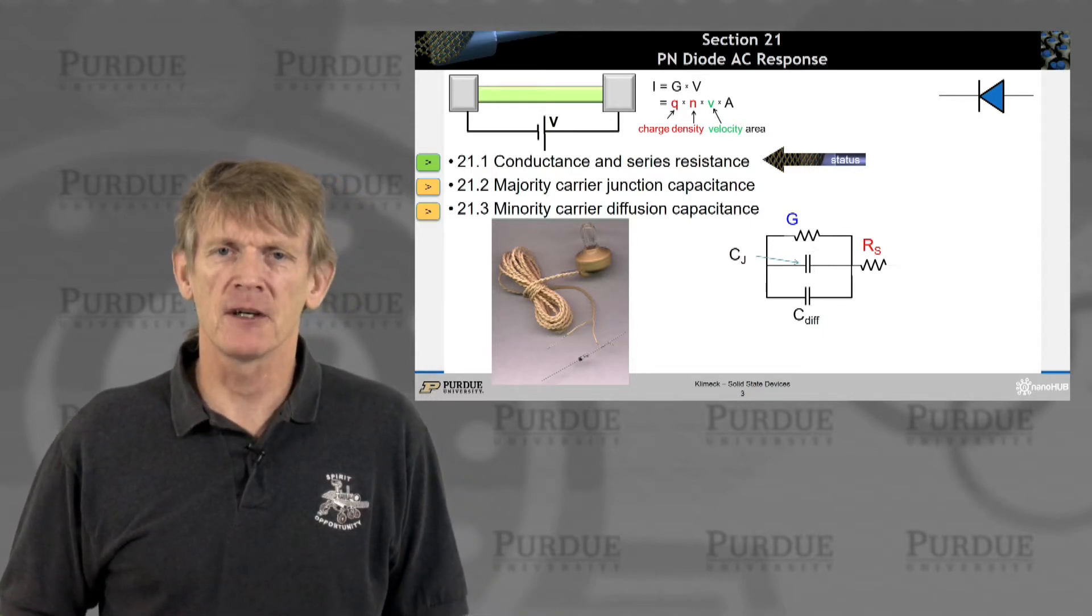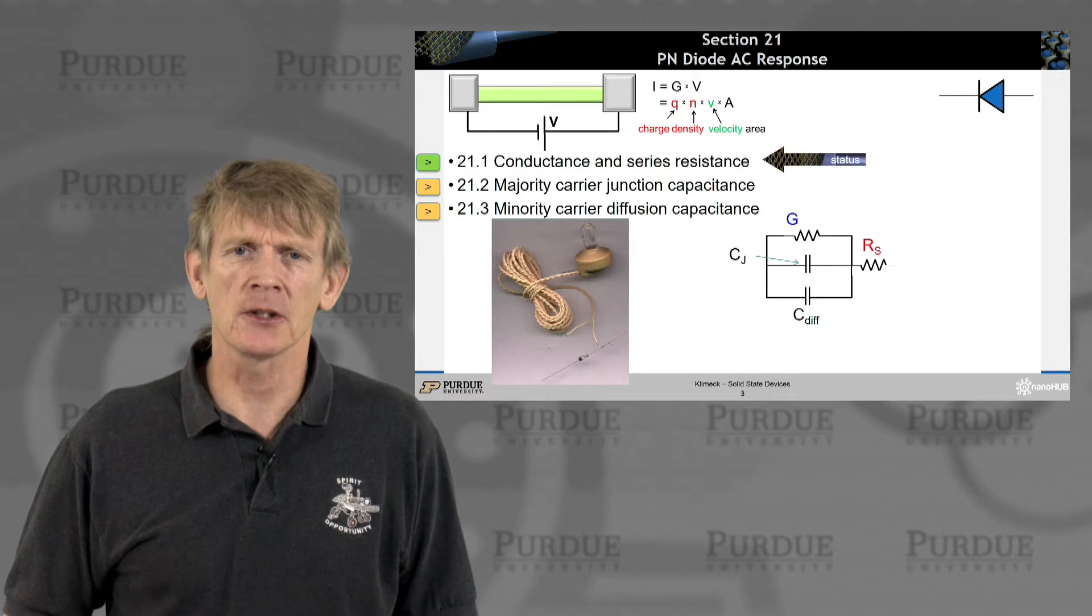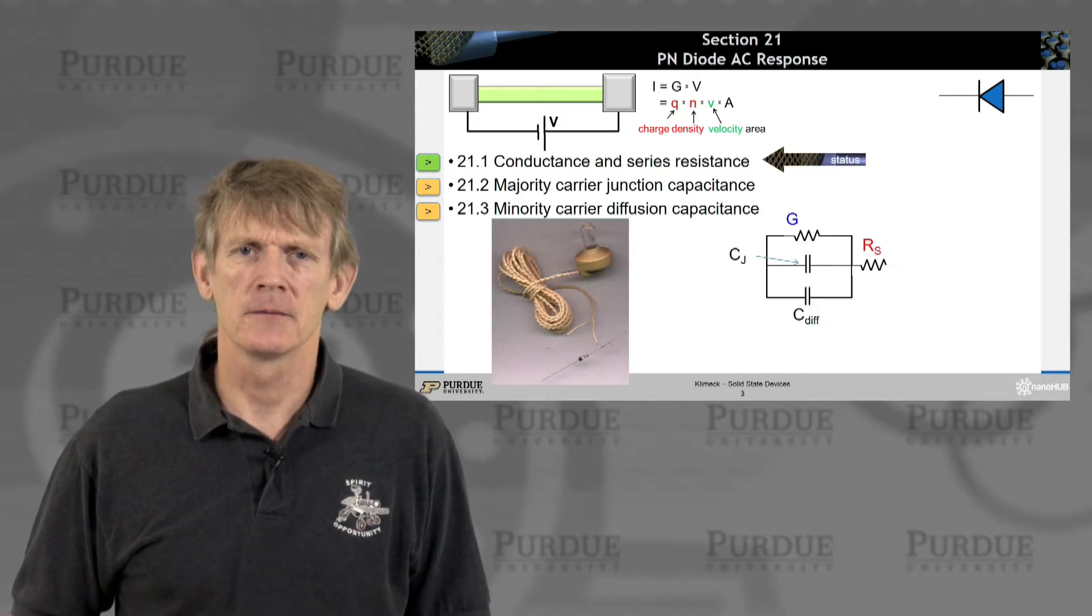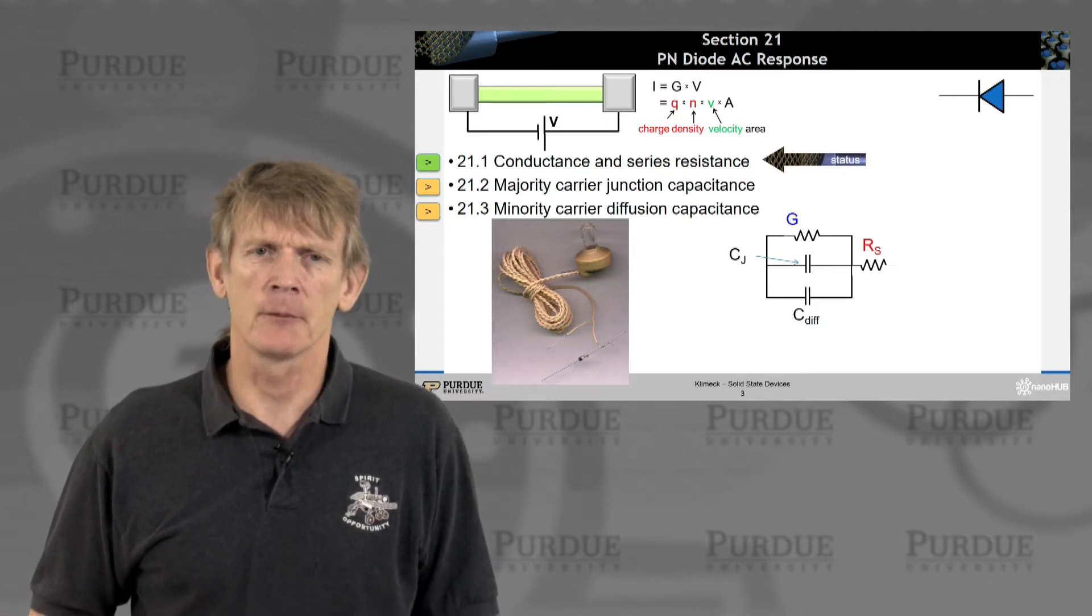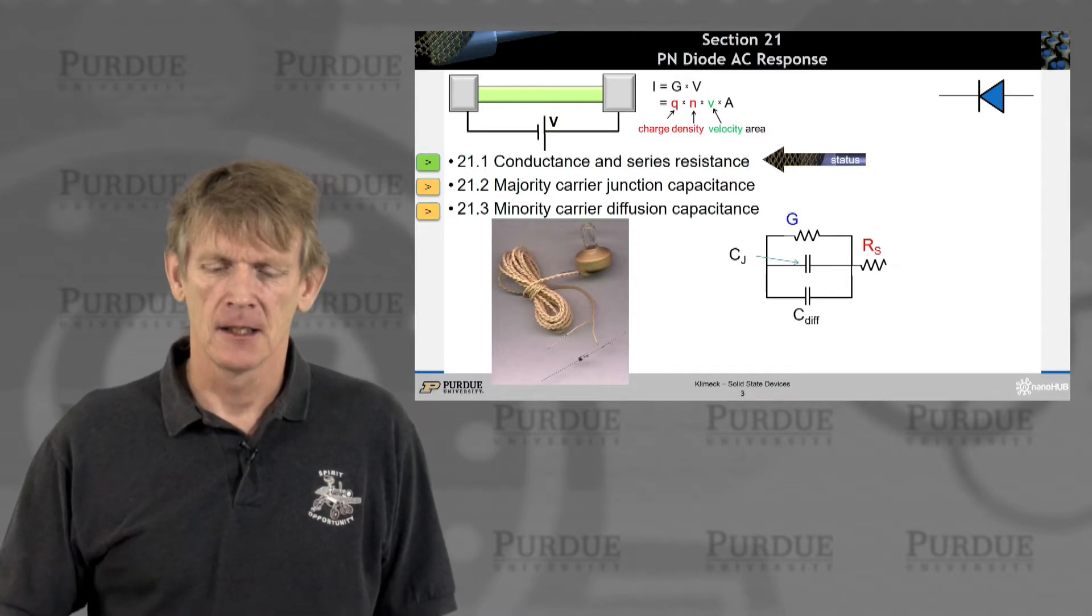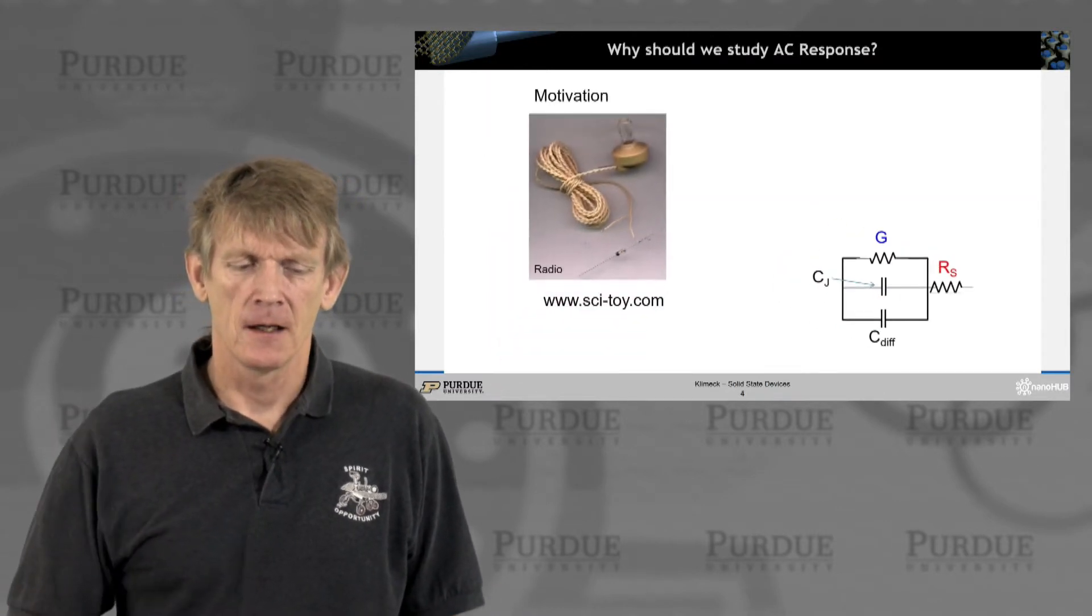We'll first devise an equivalent circuit model with a conductance and series resistance, and then we'll deal with the capacitances in this PN diode.